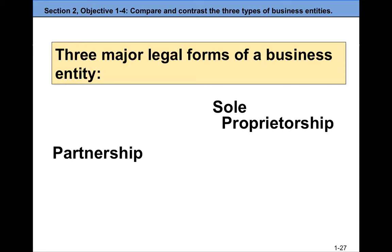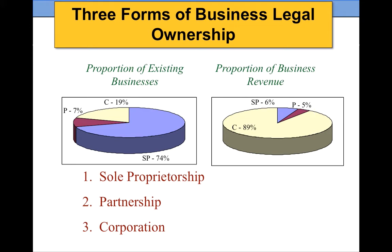Partnerships we're not covering in this class — the structure is also quite simple; instead of one owner you have two or more. Corporations we will cover in Business 1A, which is a financial accounting course. Looking at data on the number of businesses, almost three-fourths of all businesses are sole proprietorships. By number the most popular is the simplest form. 19% are corporations and 7% are partnerships.